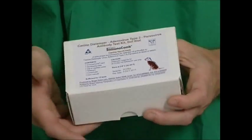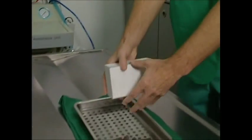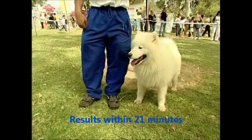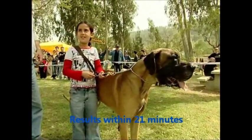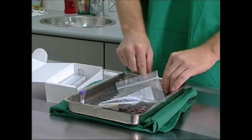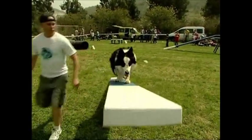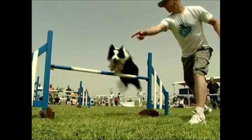So how does the Immunicomb work? The kit contains all the necessary agents for developing the test. Results for the tests are obtained in most cases within 21 minutes. The pet range of Immunicomb kits have been designed to test for diseases in dogs, cats, and exotic birds.